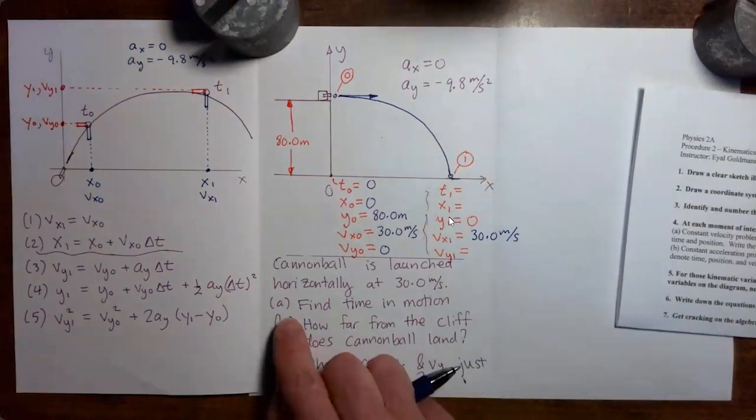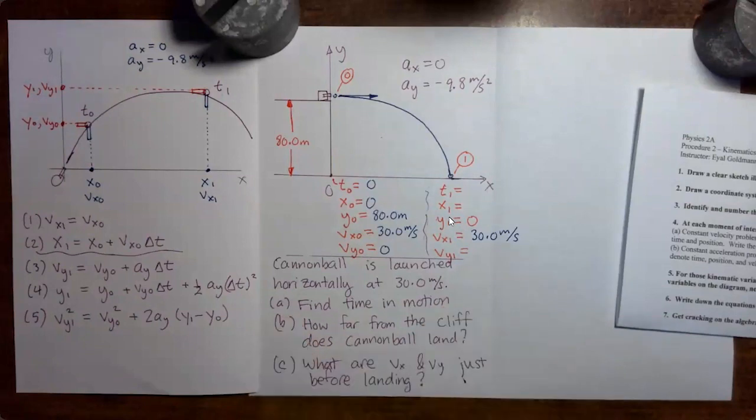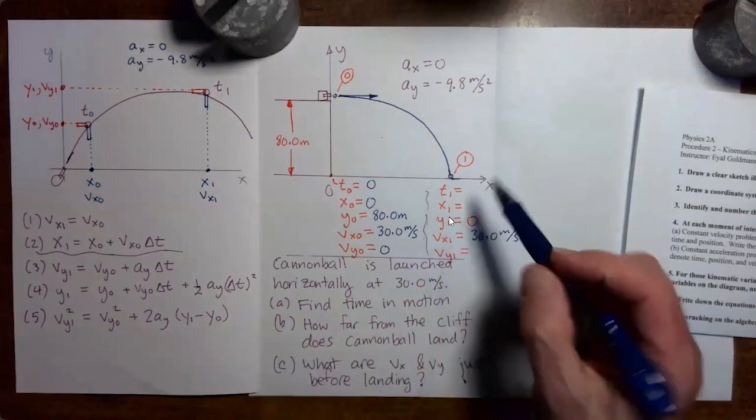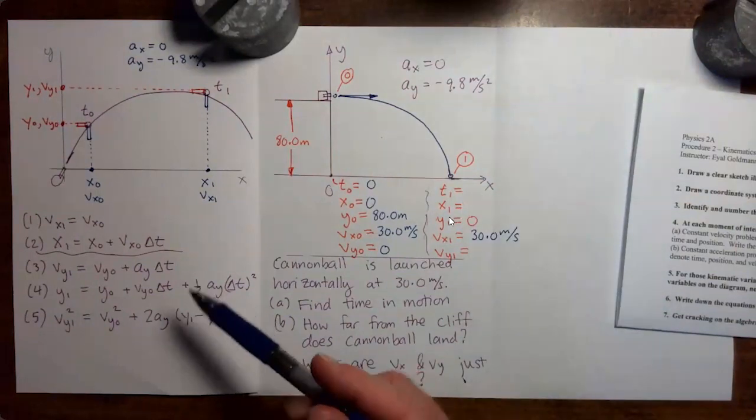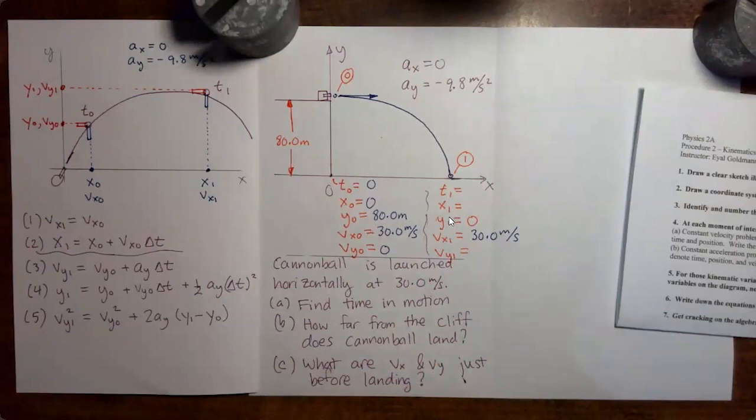Okay, part a, let's find the time in motion. In other words, we are looking for time one here. Okay, so why don't you try going through the list of equations and see if you can find an equation where the only unknown is time one. And if you find that equation, see if you can work out time one on your own and then rejoin the video.